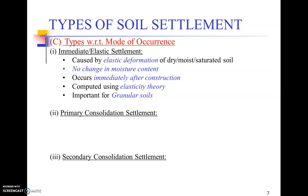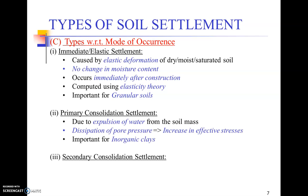Immediate settlement is caused by elastic deformation of dry, moist, or saturated soils, with no change in moisture content. It occurs immediately after construction and is computed using elasticity theories. It is important for granular soils. Primary consolidation settlement, on the other hand, is important for non-granular or cohesive, mostly plastic soils. It occurs because water is expelled from the voids, pore pressure dissipates over time, and effective stresses increase — already covered in Geotechnical Engineering 1.